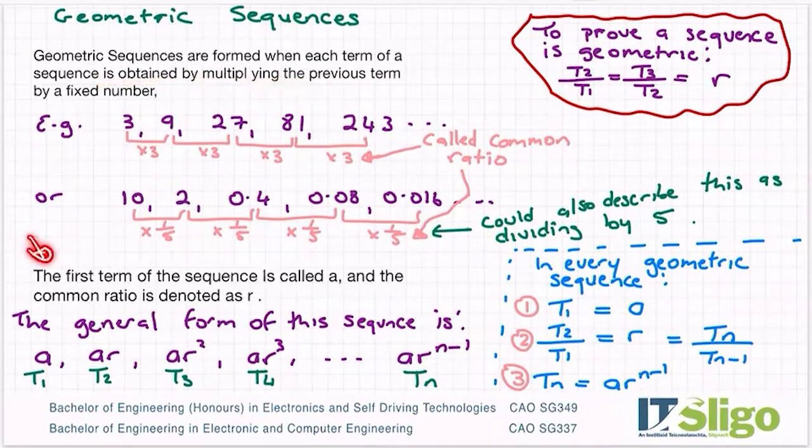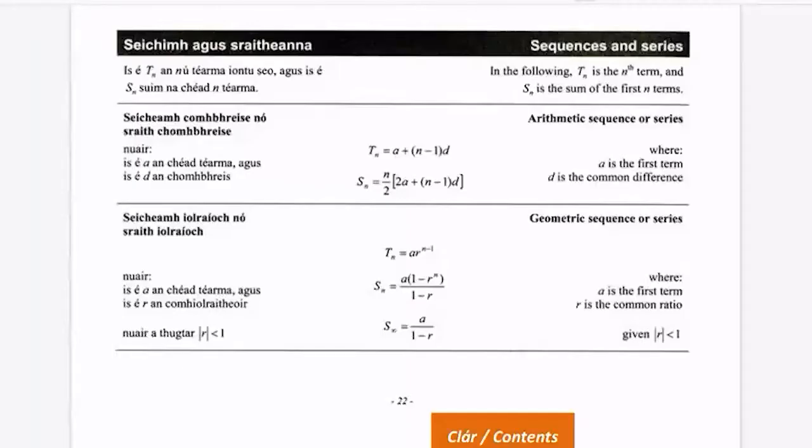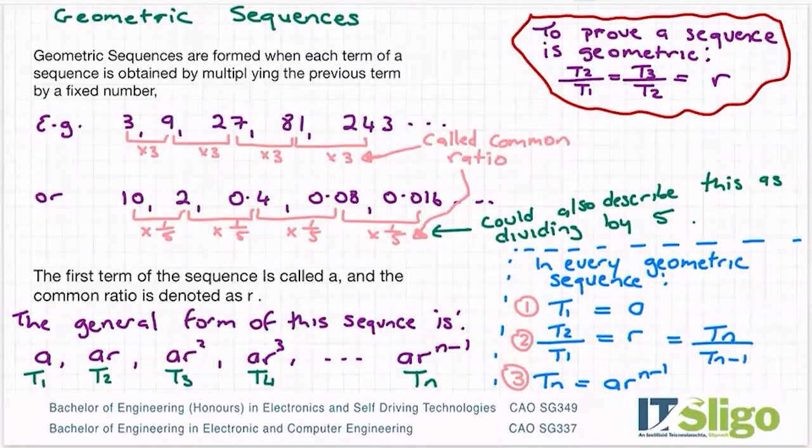Just like before, the first term of geometric sequences is called a and the common ratio is called r. When we were doing arithmetic sequences, a was the first term, d was called the common difference. So d for common difference or r for common ratio - you can see d for difference or r for ratio, just to help you remember it.